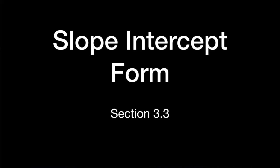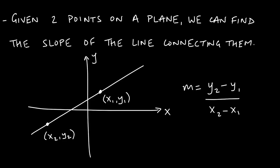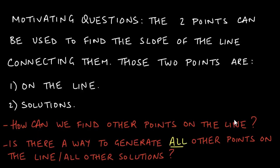Welcome to section 3.3 on the slope-intercept form of the equation of a straight line. As a review from the previous section, given any two points on a plane we can always find the slope of the line connecting them. Given two points (x1, y1) and (x2, y2), the slope of that line can be found by the formula: y2 minus y1 over x2 minus x1.